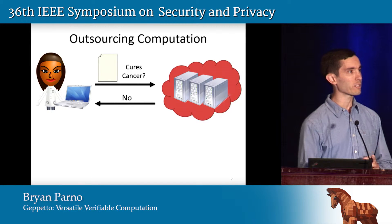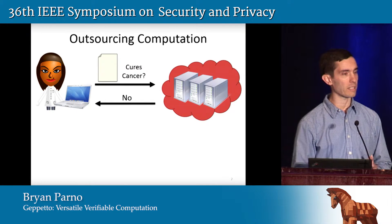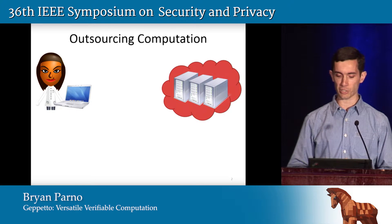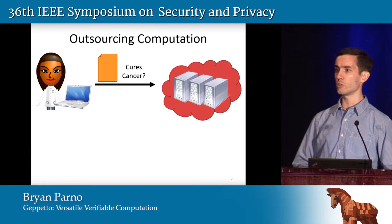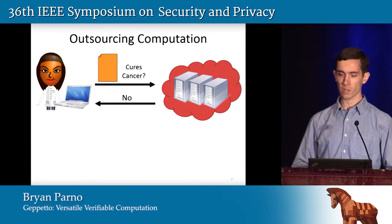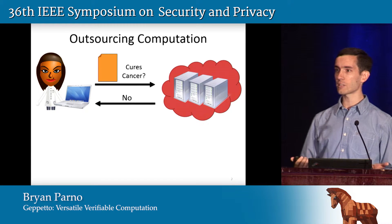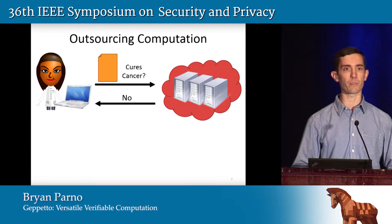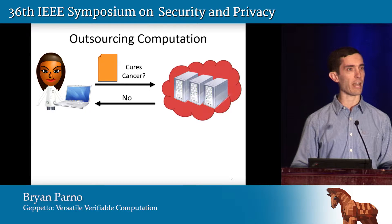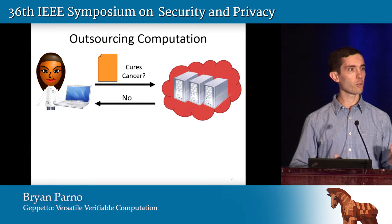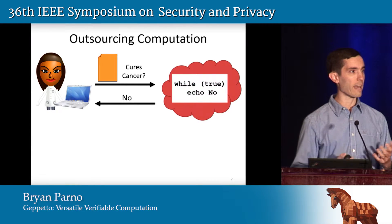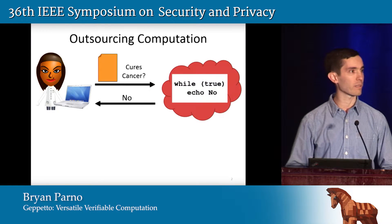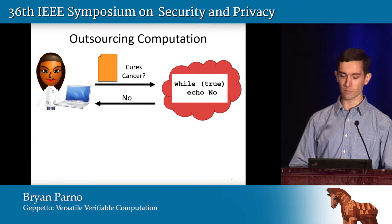Based on that response she might send the computation and run it with some new data hoping to get a new answer. From Alice's perspective it's very important to know whether the cloud is doing what she asked it to, or if it's doing something a little bit simpler and probably cheaper from the cloud's perspective.